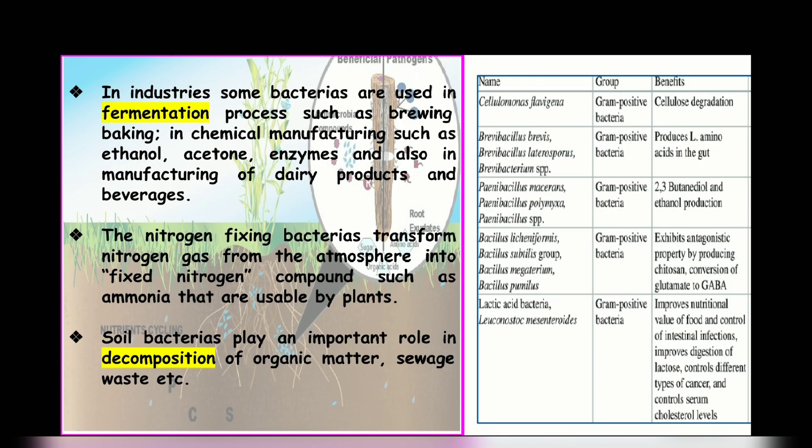In the pharmacological industries, bacteria are used to produce antibiotics, vaccines, and medically useful enzymes. They are also helpful to plants — they help in nitrogen fixation.